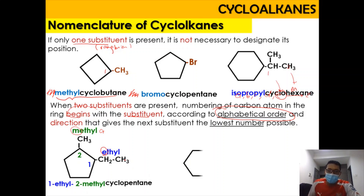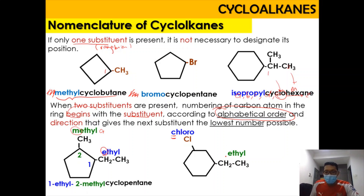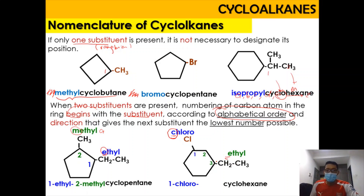For another example, we have a cyclohexane with an ethyl group and a chloro substituent. Chloro starts with C, and ethyl starts with E, so C comes before E — chloro takes number 1 and ethyl takes number 3. Counting around the ring: 1, 2, 3, 4, 5, 6. The name is 1-chloro-3-ethylcyclohexane. Remember to separate numbers and words with a dash.